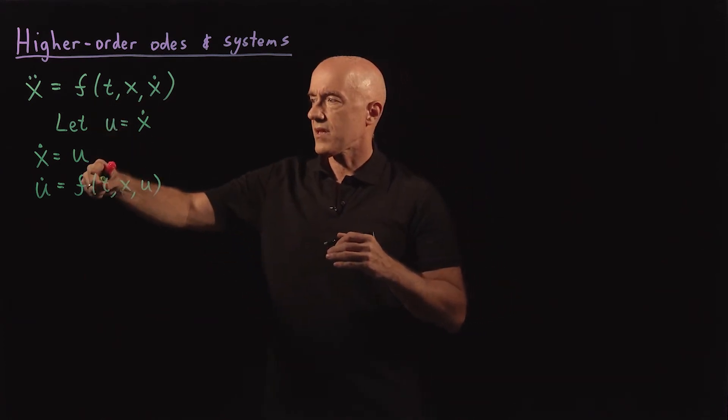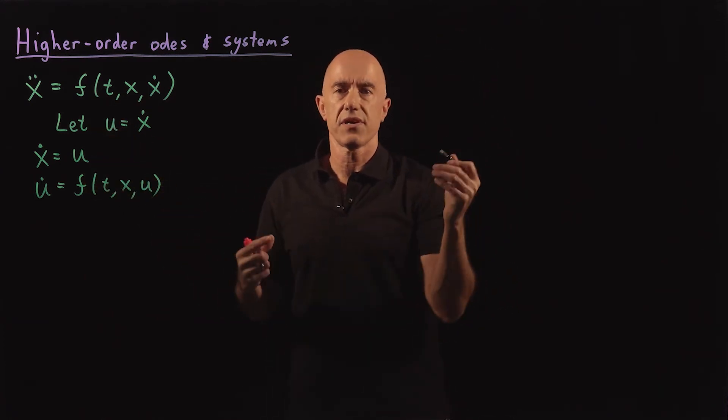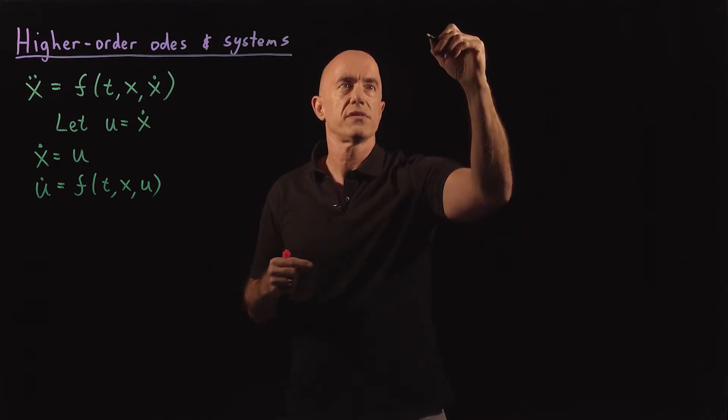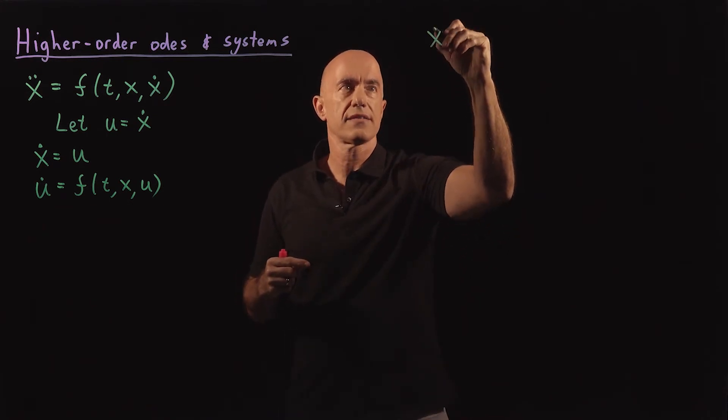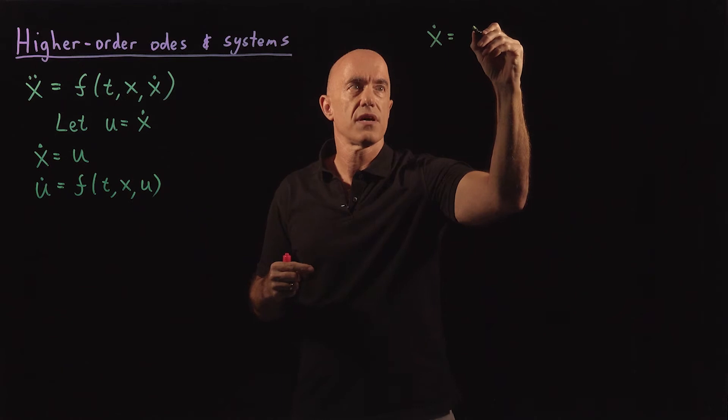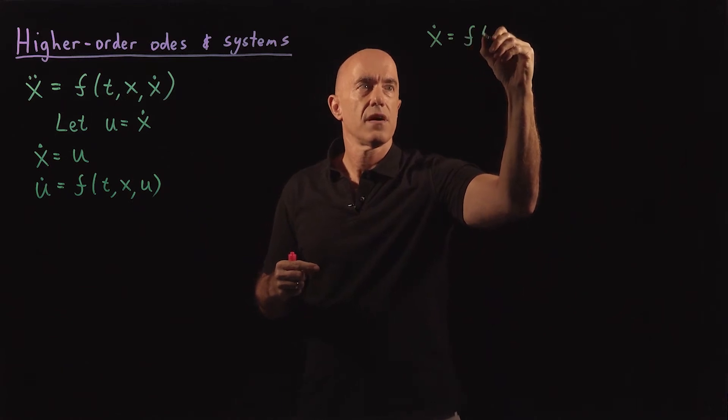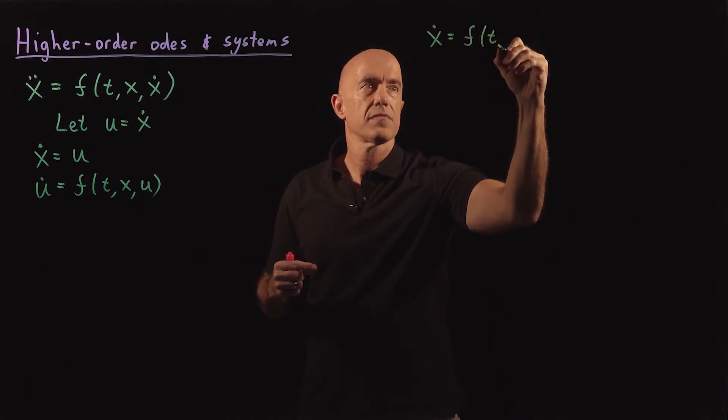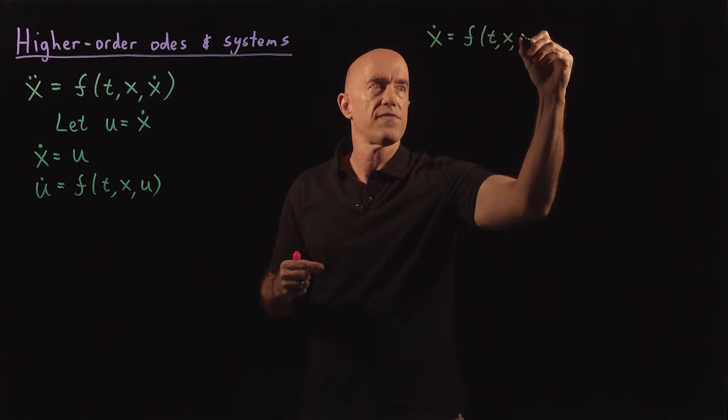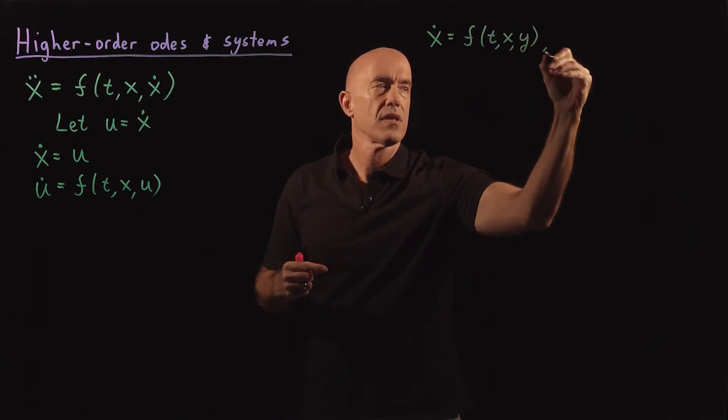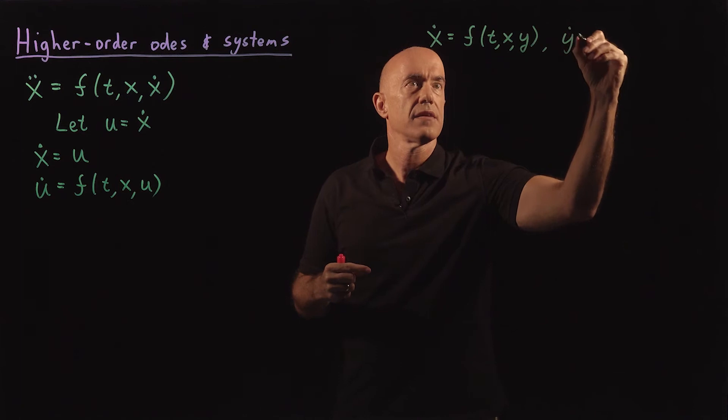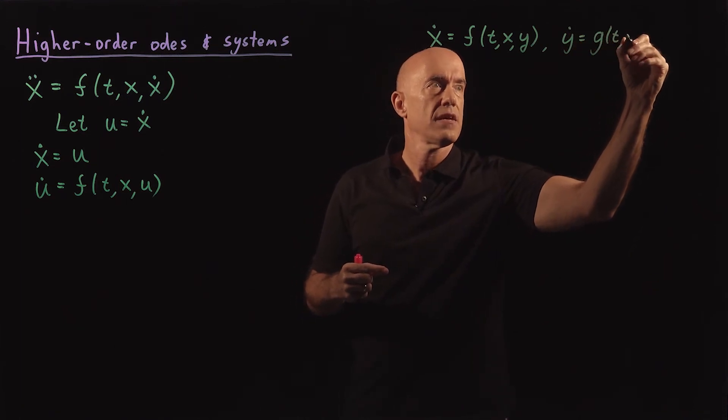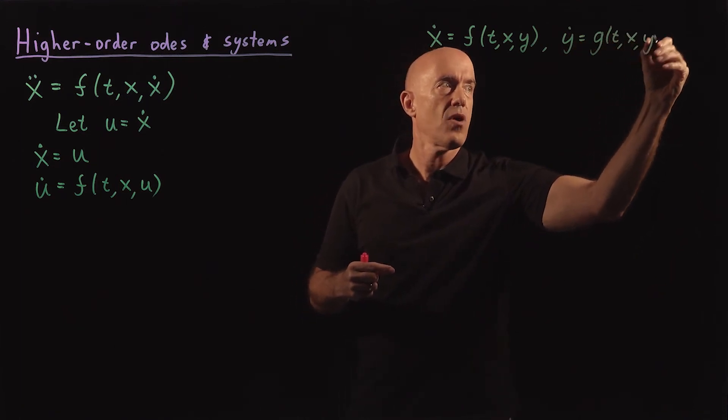So let's do that in general. Let's look at a system of first-order equations. So I'll write down x dot equals f of t, x, and then another variable y.